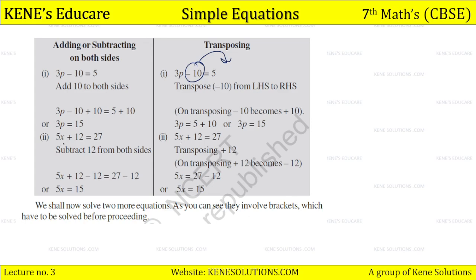Similarly, 5x plus 12 equals 27. Subtract 12 from both sides, so 5x equals 15. But when we're transposing, 5x plus 12, we transpose this. So students, on transposing, plus 12 becomes minus 12. That's why 5x equals 27 minus 12. The answer becomes 5x equals 15.